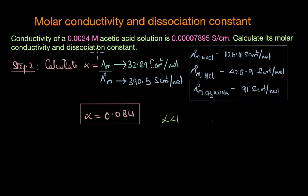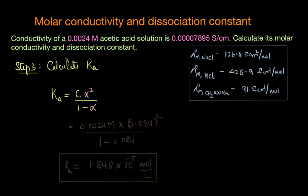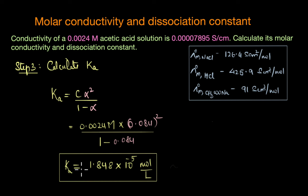Our next step is to calculate the dissociation constant, which is pretty straightforward. We simply substitute the concentration and alpha into the equation Ka = Cα² / (1 − α). We get Ka = 1.848 × 10⁻⁵ mol per liter. This low value shows that at equilibrium there are fewer ions — CH₃COO⁻ and H⁺ — and acetic acid is mostly present in the undissociated form.